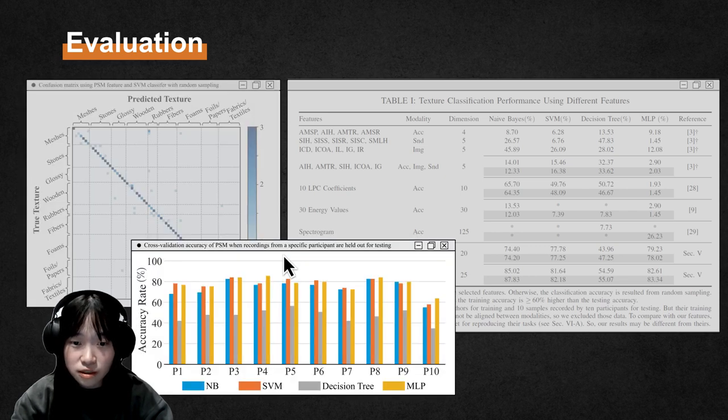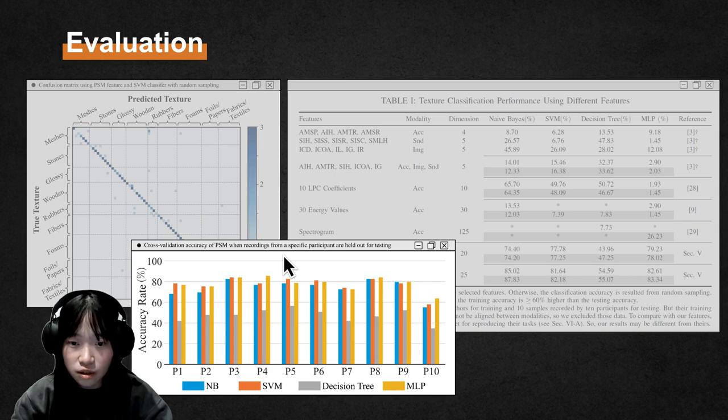Moreover, we performed a participant-specific cross-validation with 10-folds to show the features are robust against different interaction styles. For more information, please check our paper. Thank you.